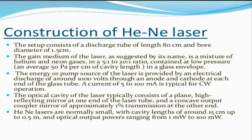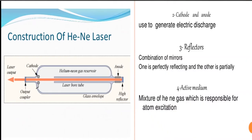A current of 5 to 100 milliamperes is typical for CW operation. The optical cavity typically consists of a plain high-reflecting mirror at one end of the laser tube and a concave output coupler mirror of approximately 1% transmission at the other end. Helium neon lasers are normally small, with cavity lengths of around 15 centimeters up to 0.5 meters and optical output powers ranging from 1 milliwatt to 100 milliwatts.